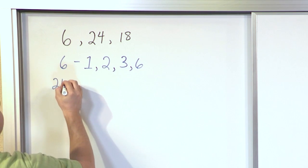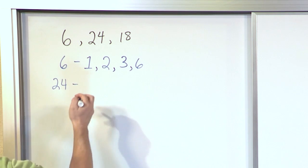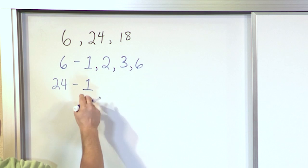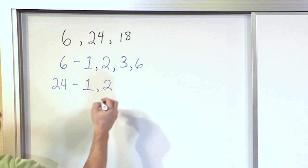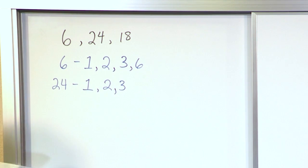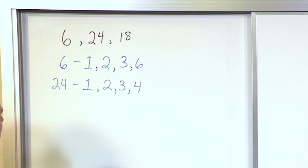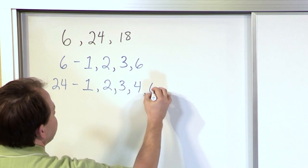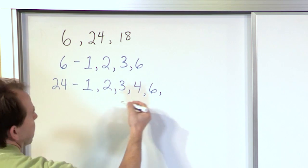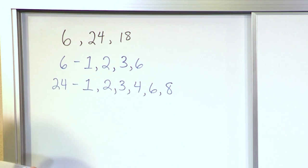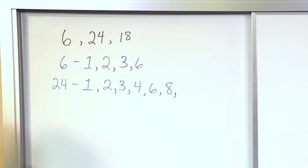Then we look at our middle number, 24, and list all the factors — it can get a little tricky, so we need to do it step by step. The number 1 is a factor because it can divide in. The number 2 is a factor because 2 times 12 is 24. The number 3 is a factor because 3 times 8 is 24. The number 4 is a factor because 4 times 6 is 24. The number 5 is not a factor, but 9, 10, and 11 are also not factors because they cannot be divided in.